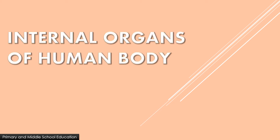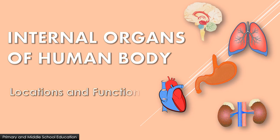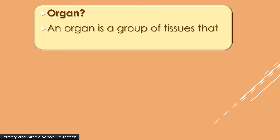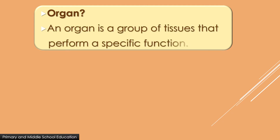Internal organs of the human body. Let's know about their locations and functions. First, let us understand what is an organ. An organ is a group of tissues that perform a specific function.